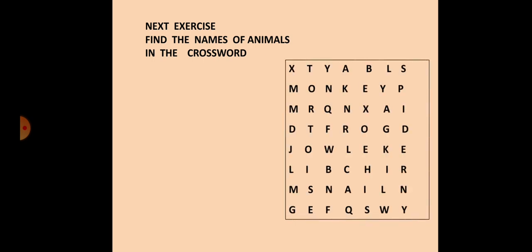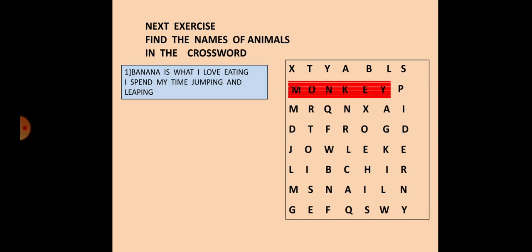Now the next exercise, you have to find the names of animals in the crossword. This is the crossword given in your book. Here we have some questions, it's like a riddle and you have to find the names of the animals from this box. The first one: banana is what I love eating, I spend my time jumping and leaping. Yes, the answer is monkey. Exactly.